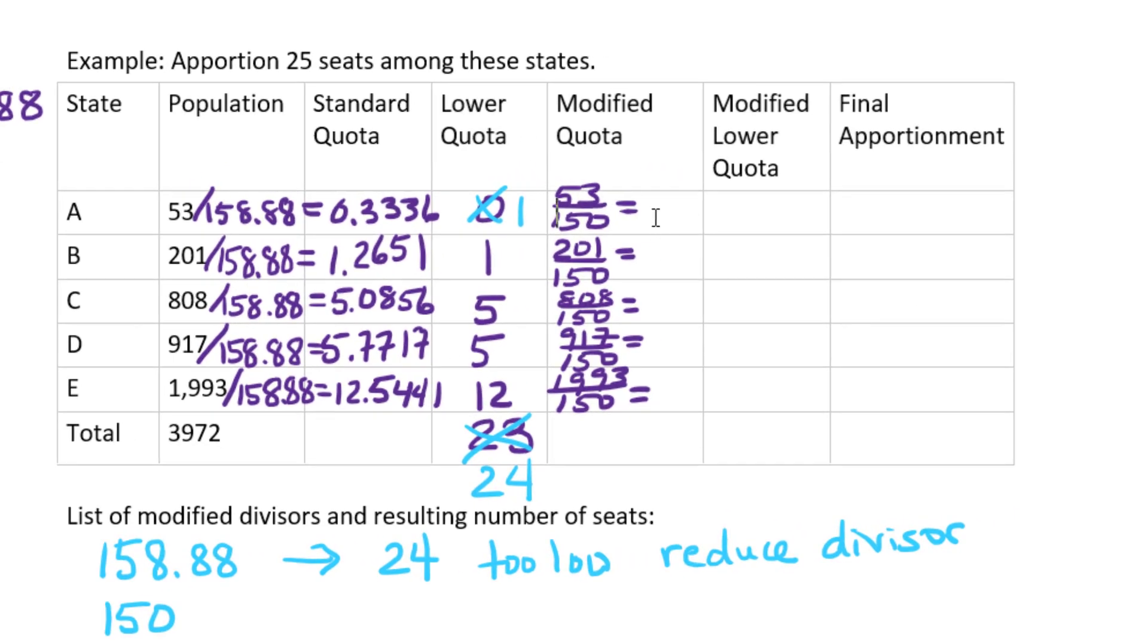So for example, 53 divided by 150 is 0.3533. 201 divided by 150 is actually 1.34 even. 808 divided by 150 is 5.3867, and so on.